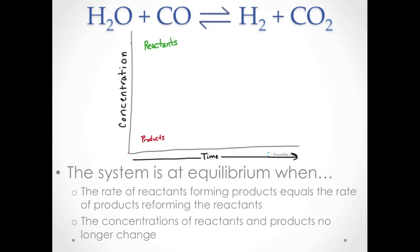Consider the reaction of water vapor and carbon monoxide gas to form hydrogen gas and carbon dioxide gas. The double-headed arrow shown here signifies that this is a reversible reaction. As the reaction proceeds, the water and carbon monoxide concentrations decrease, and the hydrogen and carbon dioxide concentrations increase.